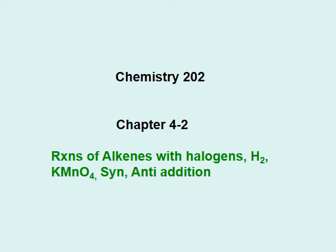In this section we're going to discuss the reaction of alkenes with halogens, hydrogen, and potassium permanganate. We will also discuss syn and anti addition.